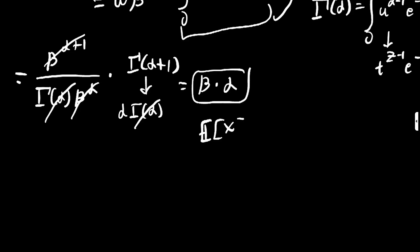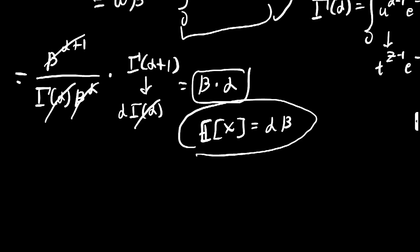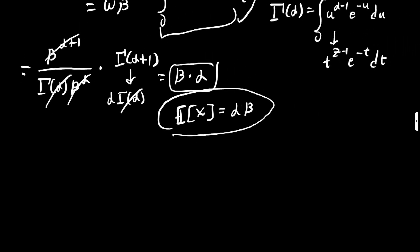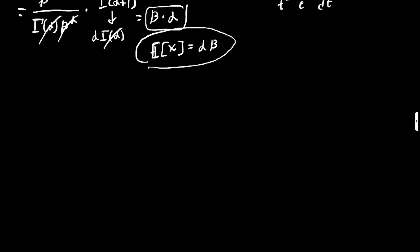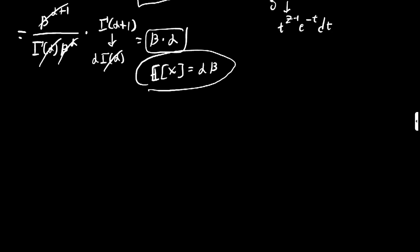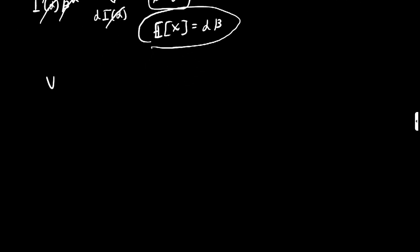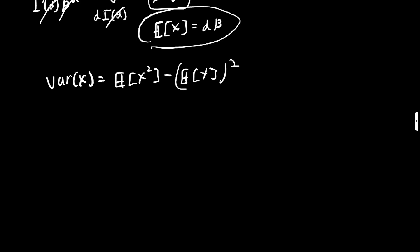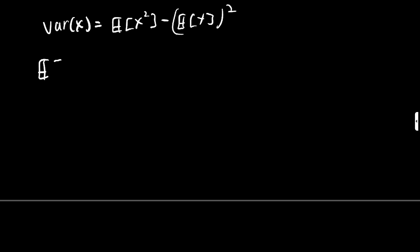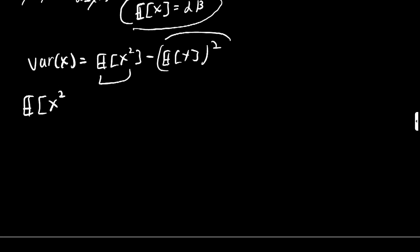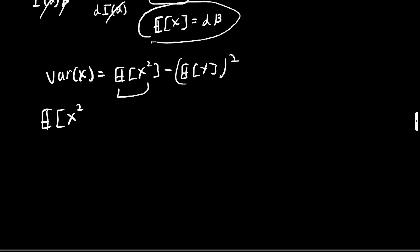So the expected value of a random variable following a gamma distribution is alpha times beta, for whatever parameters alpha and beta you choose — subject to their constraints. Now we want to find the variance. The variance of x equals the expected value of x squared minus the expected value of x, quantity squared. We know the second term; we just need to compute E[x²], which requires another integral.